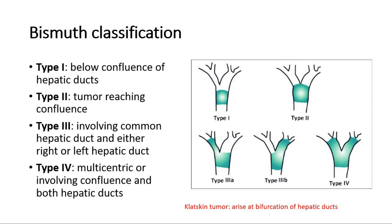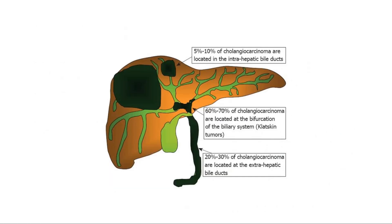There is also a type of tumor arising at the bifurcation of the hepatic duct, which is the Klatskin tumor. Out of all cases of cholangiocarcinoma, 5 to 10% are located in the intrahepatic ducts within the liver. Most of them — 60 to 70% — are located at the bifurcation of the biliary system, which is the Klatskin tumor. The remaining cases are located at the extrahepatic ducts, more commonly called distal cholangiocarcinoma.